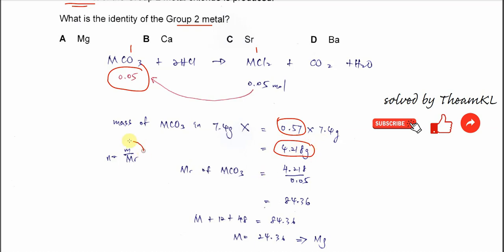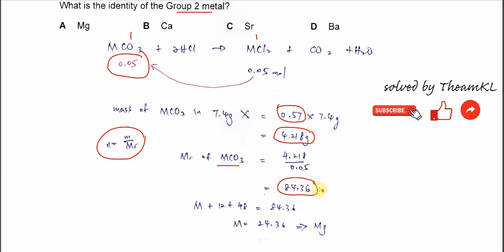We use this relation. We know that mole equals mass over molar mass. So the molar mass of this Group 2 metal carbonate is mass over mole. It's 4.218 over 0.05 moles. So we get the molar mass of the Group 2 metal carbonate.